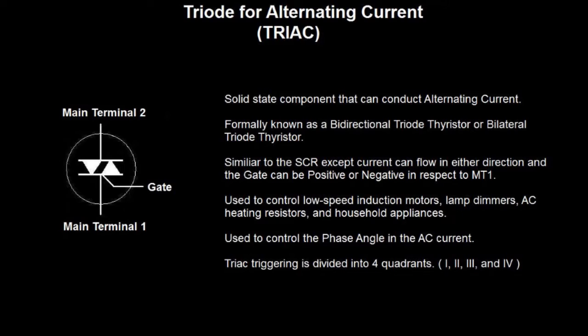If the TRIAC was turned on during the fall of the voltage and current back to zero, then the device connected to the TRIAC would have less power. This is what they mean by phase angle control.